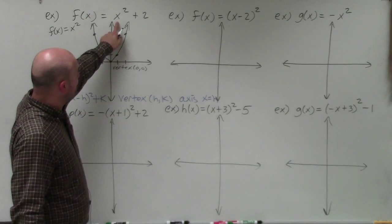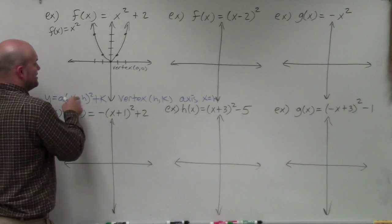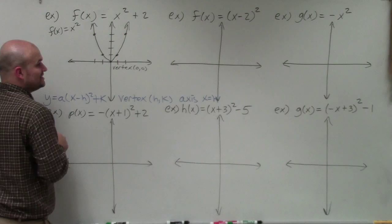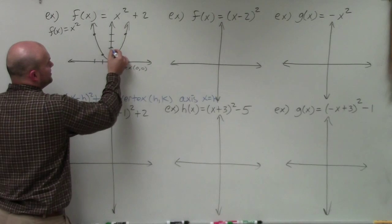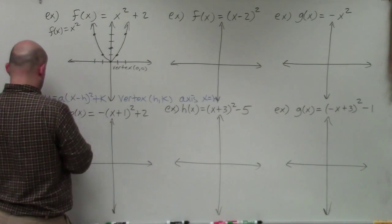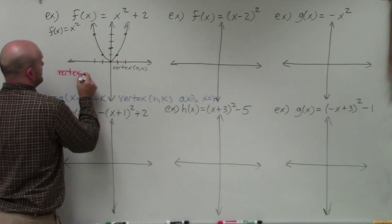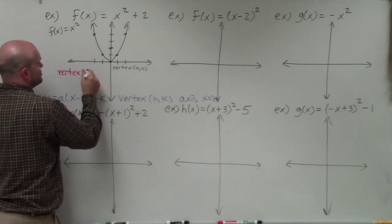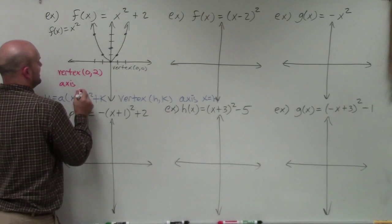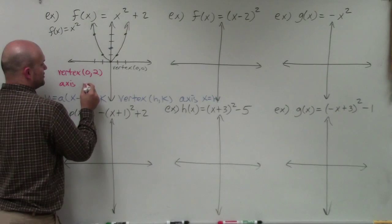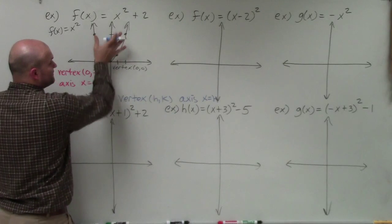Looking at our new equation, I don't have a value for h — there's no x minus anything. So h is going to be 0 and k is going to be 2, because that's what I'm adding to my function. So my new vertex is going to be at 0, 2. The axis of symmetry is x equals h, so that's x equals 0. All I'm simply doing is taking this graph and shifting it up 2 units.